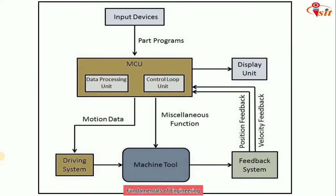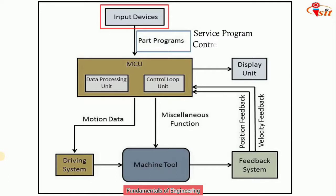The first component of a CNC machine is the input device, where part programs are provided. The program is a combination of alphabets and numerals, hence called alphanumeric data. Programs given to the CNC are of three types: first, the part program containing part dimensions, spindle speed, and feed rate; second, the service program used to check, edit, and correct the part program; and third, the control program, which accepts the part program as input to produce signals that drive the axes of motion.